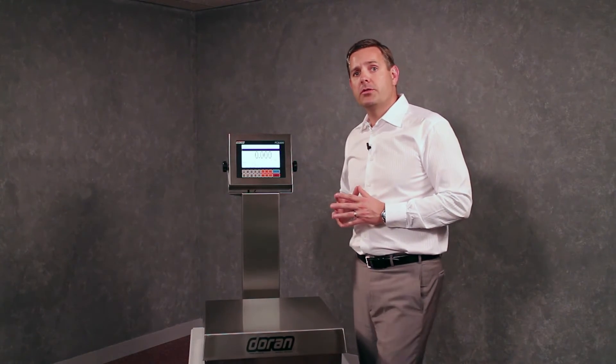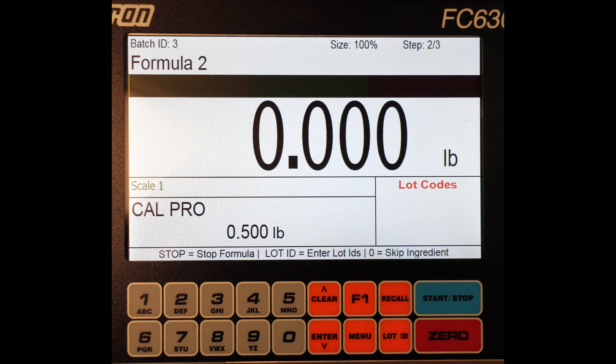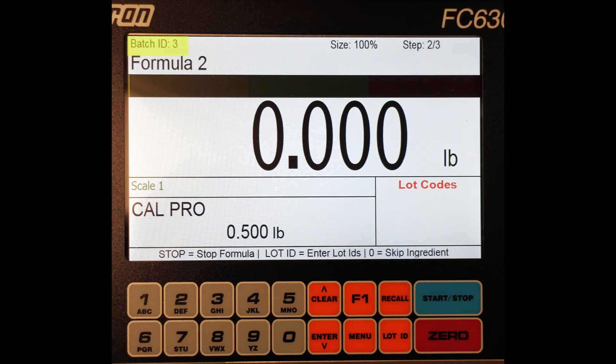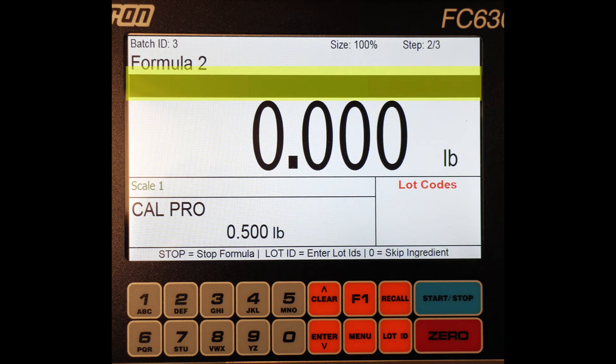Now we will go a little closer and see all the information on the display. Starting in the upper left hand corner, batch ID, the formula or batch name, the size of the batch, typically this is 100% but the unit can be programmed to run other batch sizes as well. The current step and the total steps in the formula, the AccuTrack colored bar, the current weight on the scale, the scale ID, the lot ID codes, the ingredient name, and finally the ingredient target weight.